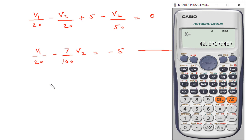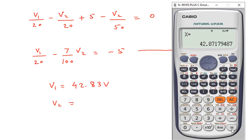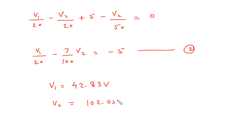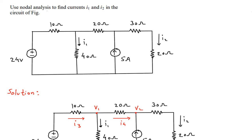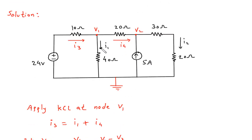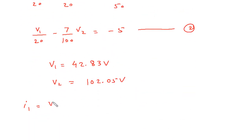Solving the equations, V1 is equal to 42.83 V and V2 is equal to 102.05 V. What we have to find is I1 and I2. I1 is equal to (V1 minus 0) by 40, so I1 equals V1/40. V1 is 42.83, so I1 equals 42.83 divided by 40.